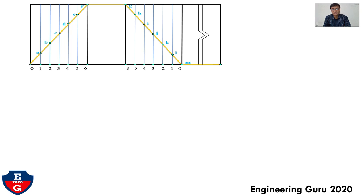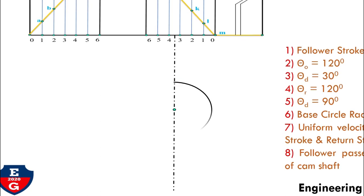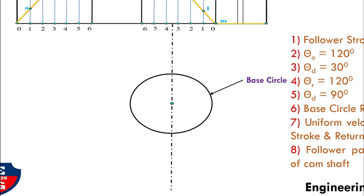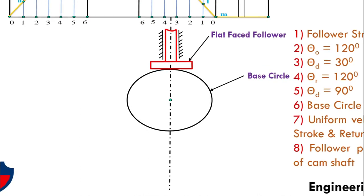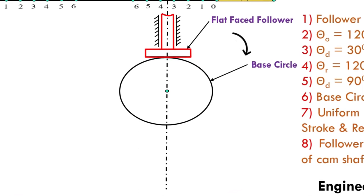Now we will draw the cam profile. The lift of the follower S equals 20 mm, theta O is 120 degrees, theta D is 30 degrees, theta R is 120 degrees, theta D is 90 degrees, base circle radius is 25 mm, uniform velocity for both out stroke and return stroke, and the follower passes through the axis of the camshaft. Take one random center point, draw a vertical line passing through this point. The cam radius is 25 mm, so draw a circle with radius 25 mm and draw the flat face follower on this axis line.